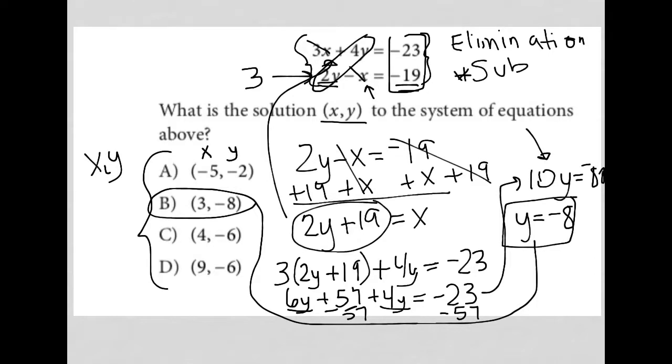So we would see that B should be the only one that works here where if I plug in 3 for x and negative 8 for y. So let's try that for the first one. I'd have 3 times 3 plus 4 times negative 8 and that needs to equal negative 23. So we have 9 and then minus 32 does equal negative 23 so that checks out.